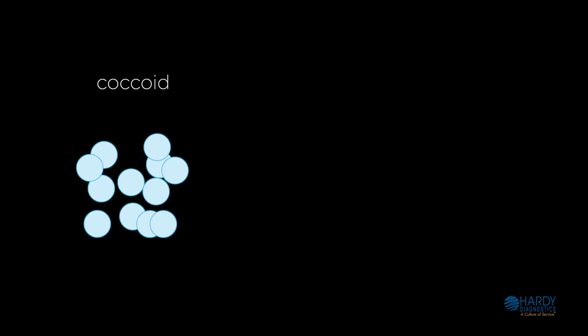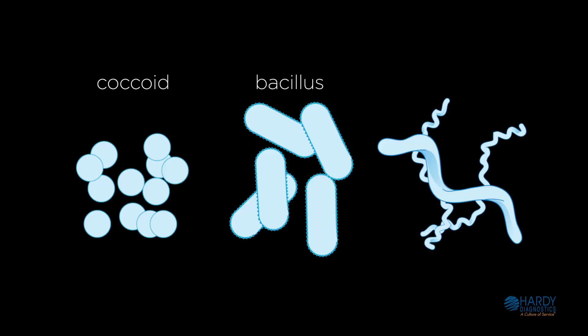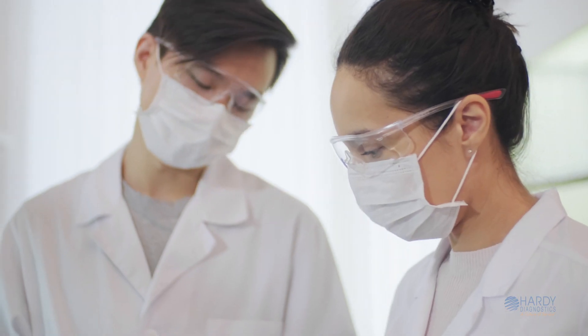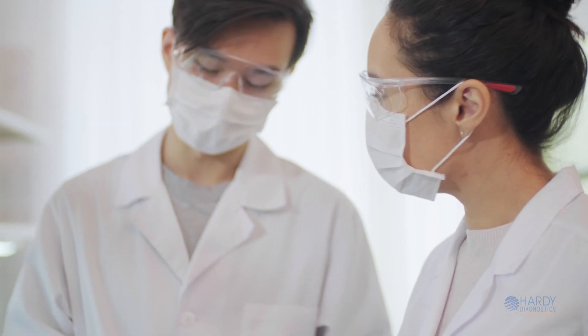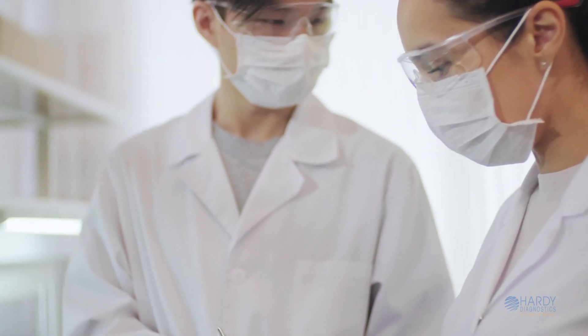Bacterial cells can be spherical, rod, or corkscrew in shape, and nearly all clinically significant bacteria can be differentiated into these three groups. Knowing which type is causing an infection is critical to patient care.